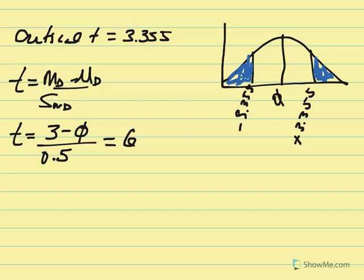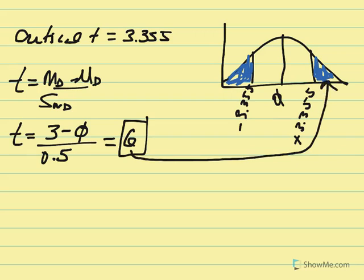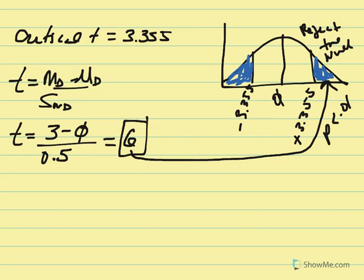We compare the T value of 6 to the null value and to the critical T established by the two-tailed test at alpha 0.01. Our T value is well into the critical region, so we reject the null. The probability of obtaining that value is less than our alpha — less than a 1% chance we'd get a mean difference of 3 if the null were true.